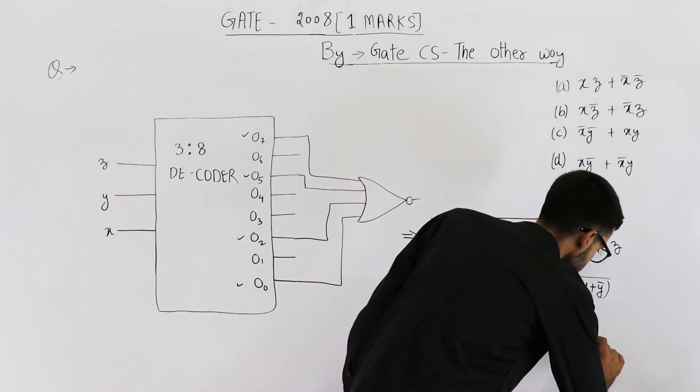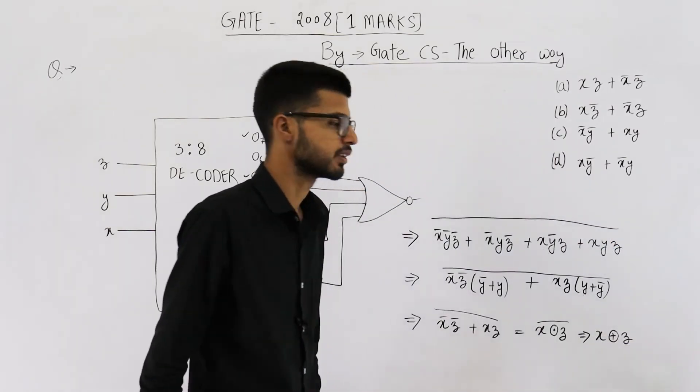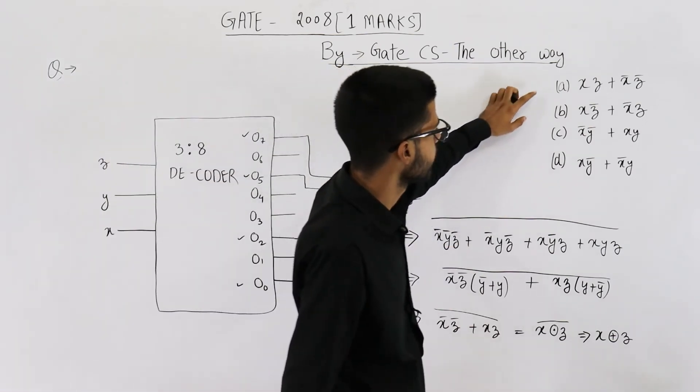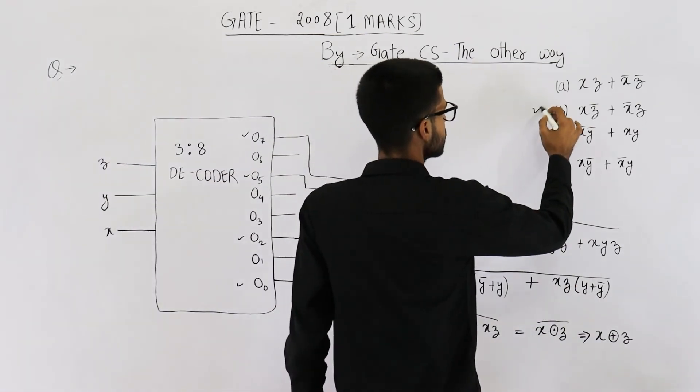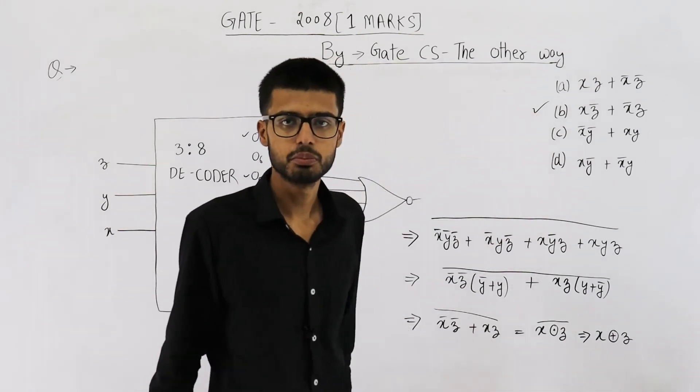So your answer is x XOR z. You can see option B is the expression for XOR. So your answer is option B.